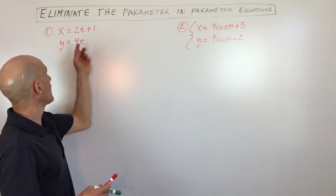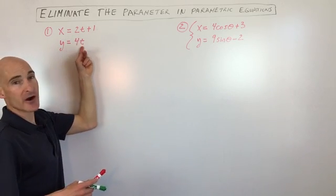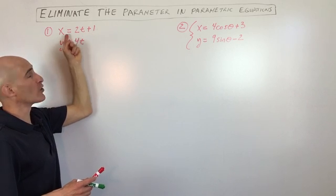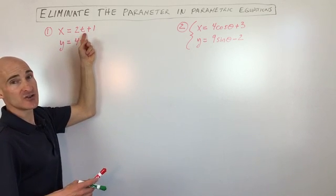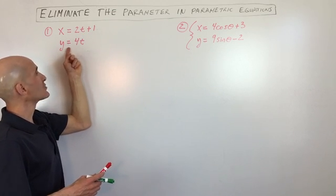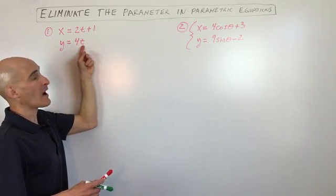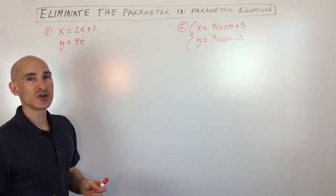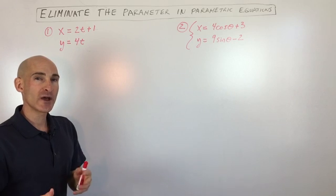Parametric equations are usually composed of two parts. The x component is the horizontal component as a function of t, where t represents time. The y component is the vertical component, also a function of t. What we want to do is eliminate that parameter t and just get an equation in terms of x and y.